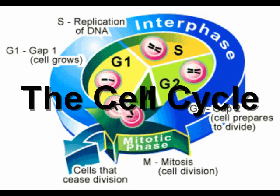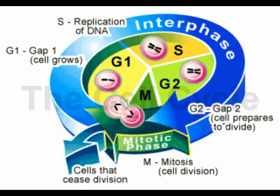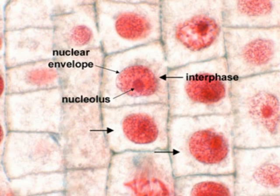The cell cycle is an orderly set of stages that take place between the time a eukaryotic cell divides and the time the resulting daughter cells also divide. Most of the cell cycle is spent in interphase. This is the time when a cell performs its usual functions, depending on its location in the body.